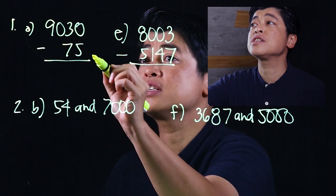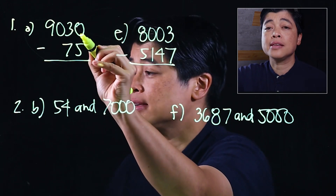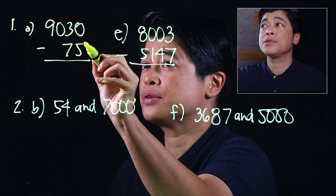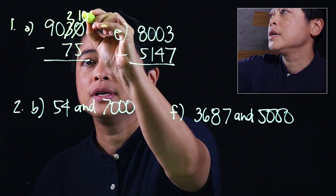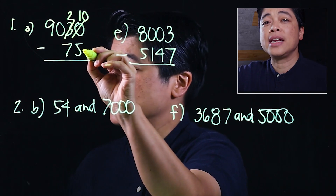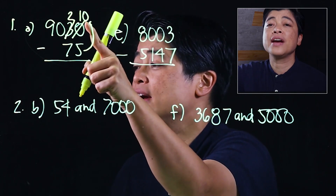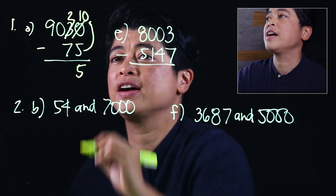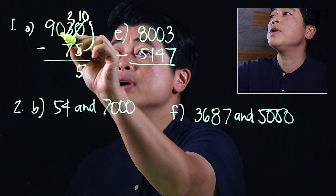The first problem is already written in computational form, so we just subtract. We start with the ones place, but we can't subtract five from zero, so we need to borrow and regroup. Just like the last lesson, we start with the five — we need another five to make it to ten.